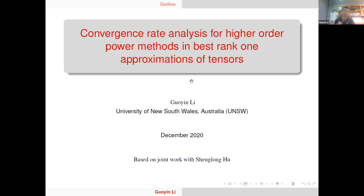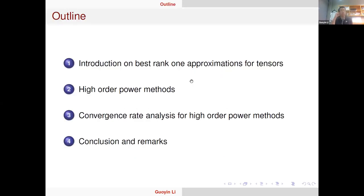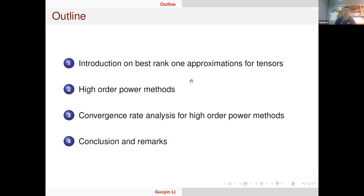This is based on joint work with my collaborator Shenlong, who is also in Hangzhou. The outline of my talk is as follows. First, let me briefly recall what the best rank-one approximation for tensors is. Then I'm going to focus on one particular method called the high-order power method, one of the most popular methods because its computational cost is minimal — it basically just uses matrix products and first-order information. In particular, I'm going to look at the convergence rate analysis for this method, and finally I hope to conclude with some remarks.